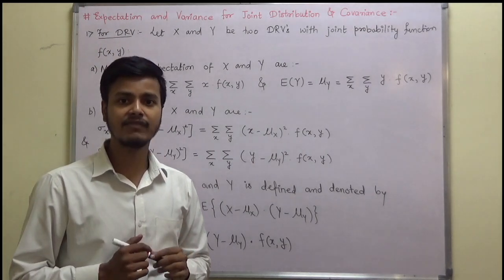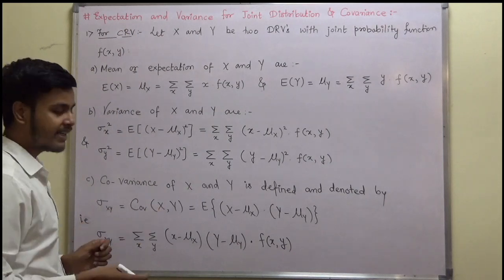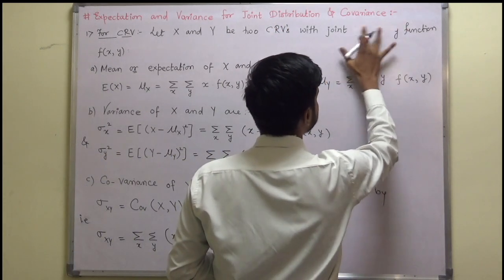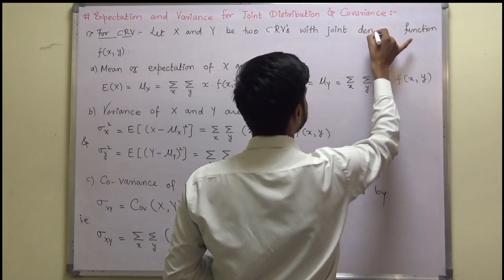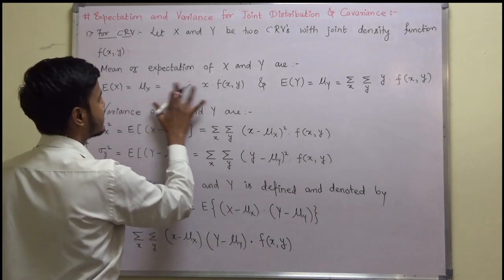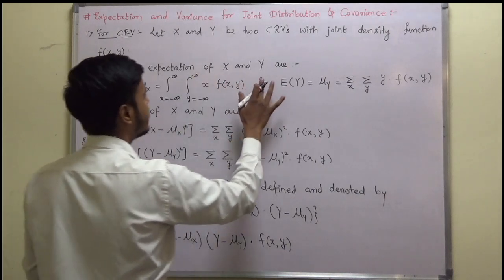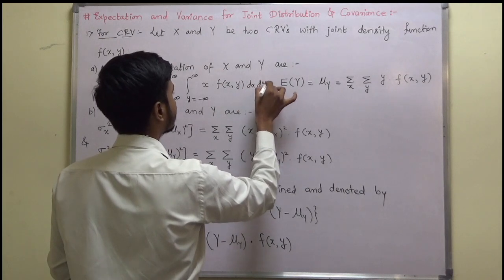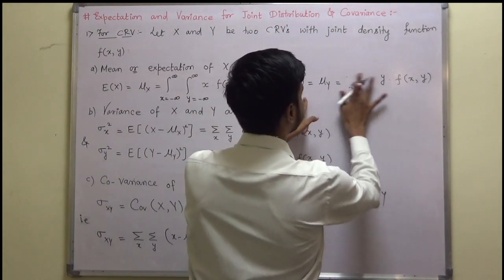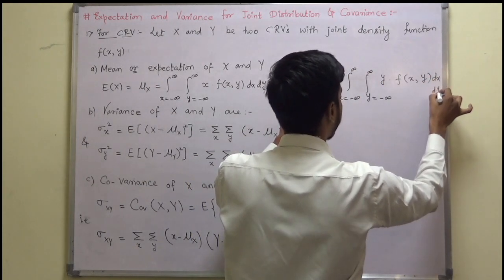Now let us define the same thing for the continuous random variable. The changes you make are: let x and y be two continuous random variables with joint density function f of x, y. Then the mean or expectation of x is given by mu x equals integration from minus infinity to infinity, integration from minus infinity to infinity, x times f of x, y dx dy. Likewise, you can define expectation of y as integration from minus infinity to infinity, integration from minus infinity to infinity, y times f of x, y dx dy.